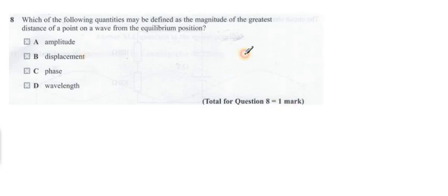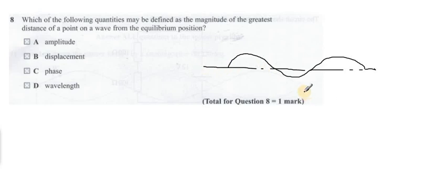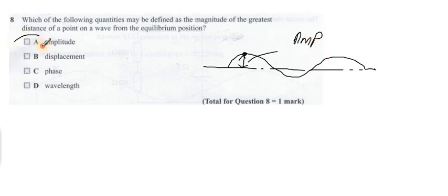Question number 8: which of the following quantities may be defined as the magnitude of the greatest distance of a point on a wave from the equilibrium position? If you have a wave, the maximum distance from the mean position is called amplitude. The option is A.